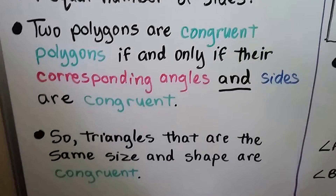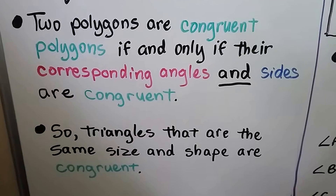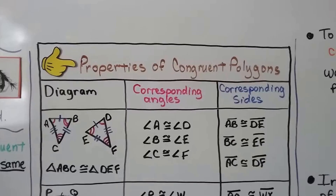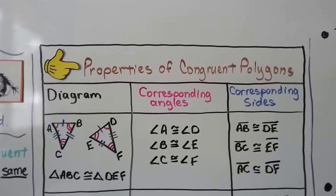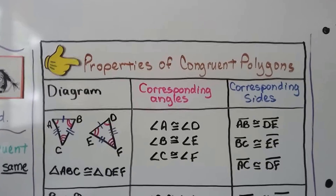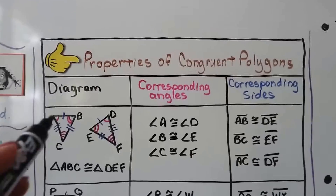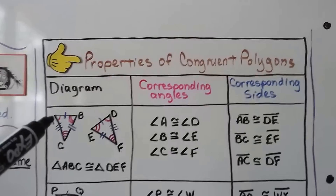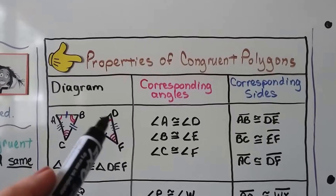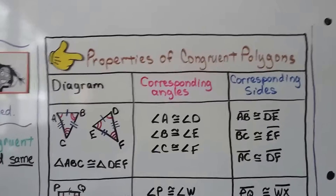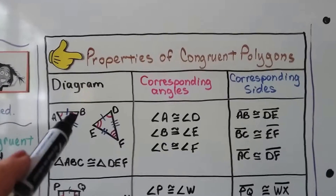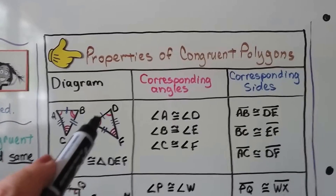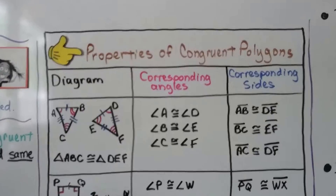Triangles that are the same size and shape are congruent. Looking at the properties of congruent polygons, we have a diagram with corresponding angles and corresponding sides. For every arc — like this one arc — it means that it's congruent to this one with one arc. The angle with two arcs is congruent to the angle with two arcs, and three is congruent to three.